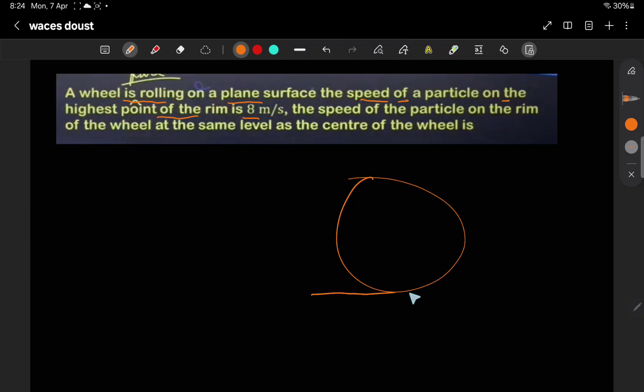Rolling motion. At the highest point, the velocity will always be 2 times the velocity of the center of mass.